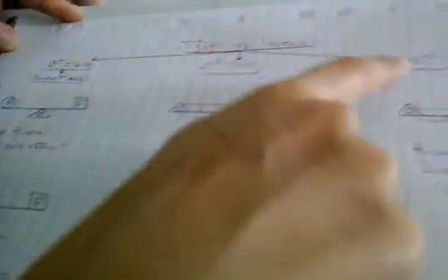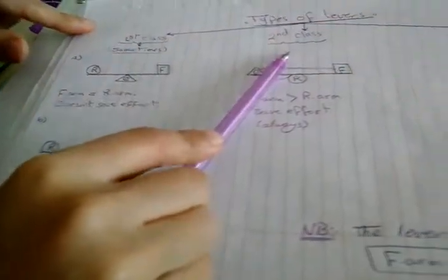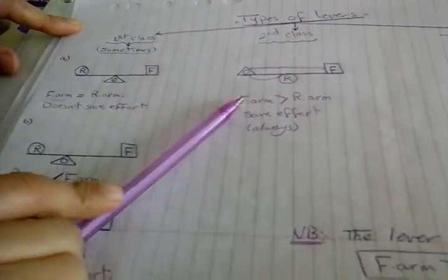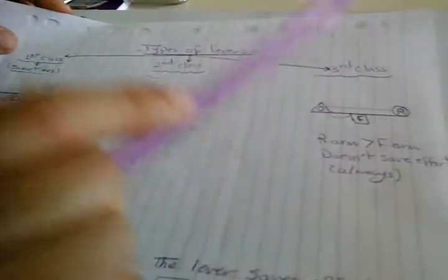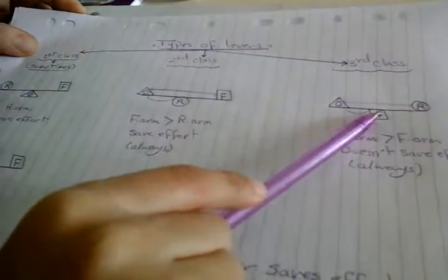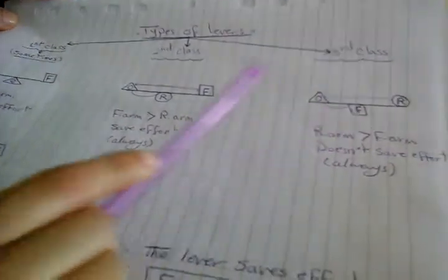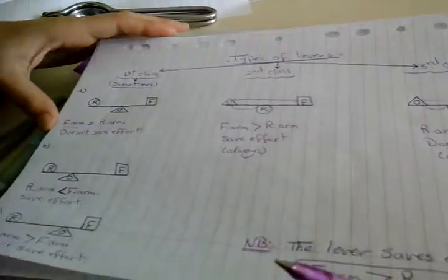Types of levers: we have three classes — first, second, and third. The first class sometimes saves effort, when the effort force arm is longer than the resistance arm. The second class always saves effort, because it always has force arm longer than resistance arm. The third class never saves effort, because it always has resistance arm longer than force arm. This is the end of lesson number two.